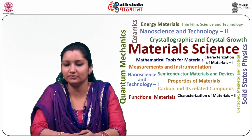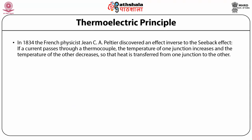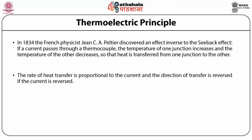A number of thermocouples connected in series is called a thermopile. In 1834, the French physicist Jean C. A. Peltier discovered an effect inverse to the Seebeck effect. If a current passes through a thermocouple, the temperature of one junction increases and the temperature of the other junction decreases, so that heat is transferred from one junction to the other. The rate of heat transfer is proportional to the current, and the direction of transfer is reversed if the current is reversed.